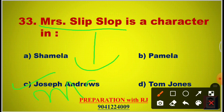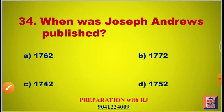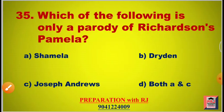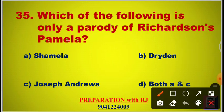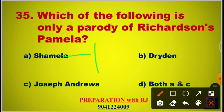Mrs. Slipslop is the maid of Lady B, also called Lady Booby. Question 34: When was Joseph Andrews published? Options are 1762, 1772, 1742, 1752. The answer is C, 1742. This is a parody of Richardson's Pamela. Question 35: Which of the following is a parody of Richardson's Pamela? Options are Shamela, Dryden, Joseph Andrews. The answer is D, both A and C — Shamela and Joseph Andrews are both parodies of Richardson's Pamela. Shamela was published in 1741, Joseph Andrews in 1742, both by Henry Fielding. Pamela was published in 1740 by Richardson.